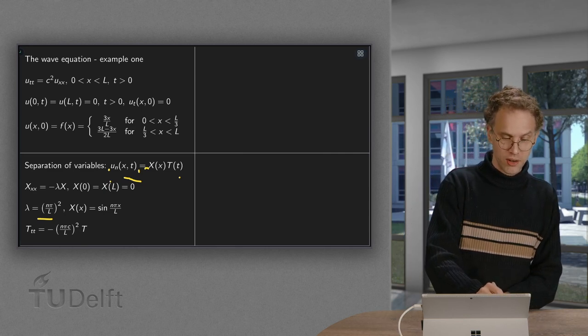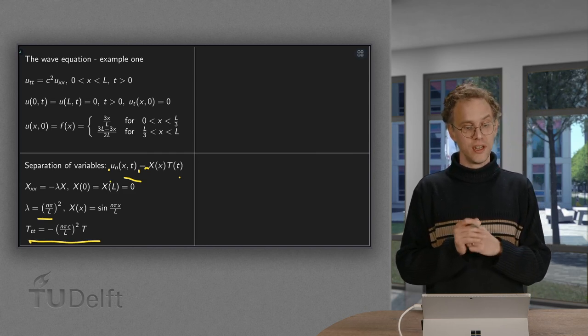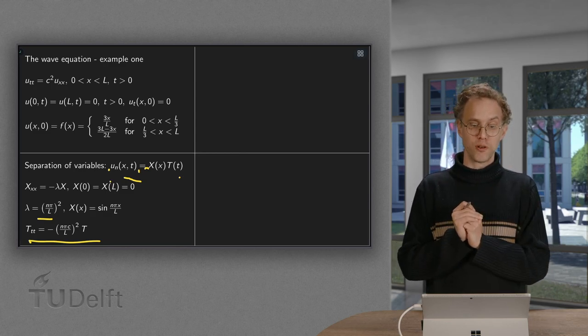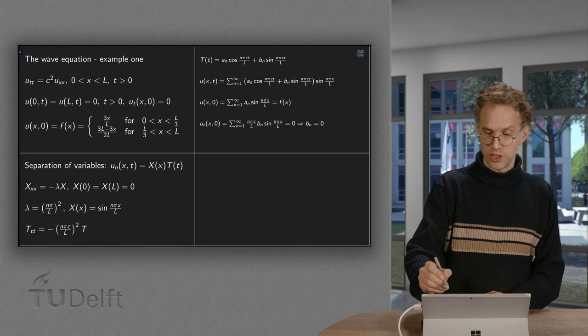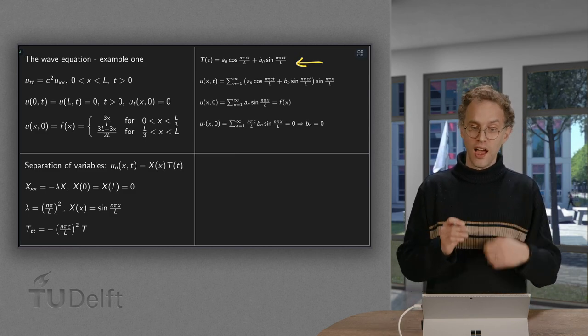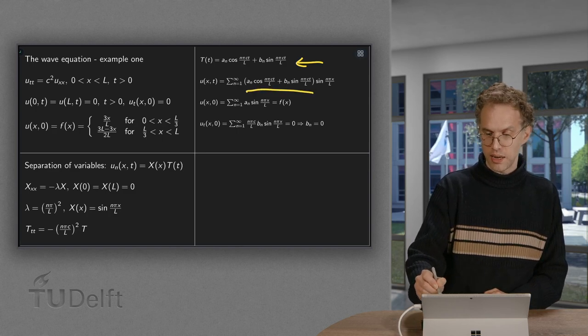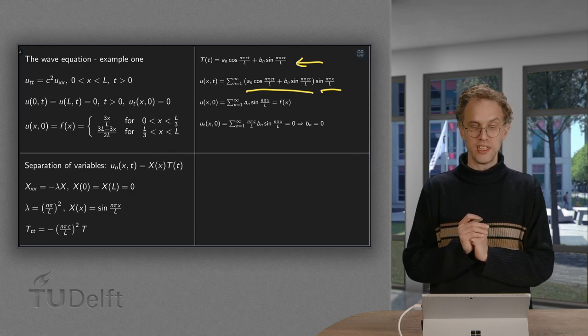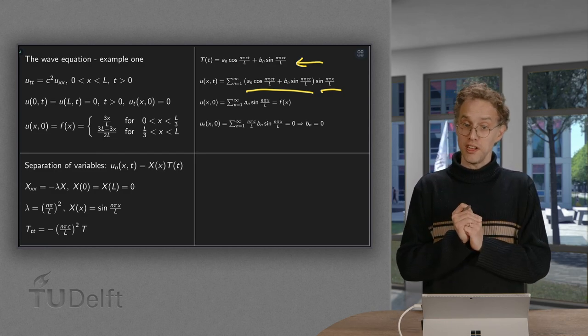And now something different happens. You get a different equation for the T of t. You get the second derivative of T with respect to time equals minus some positive constant times T. So this gives us solutions, cosines and sines for T as function of t. And our total solution then becomes this T of t times the sine n pi x over L. And then we sum n from 1 to infinity. And we still need to determine the an and the bn. That's the main point of this video.